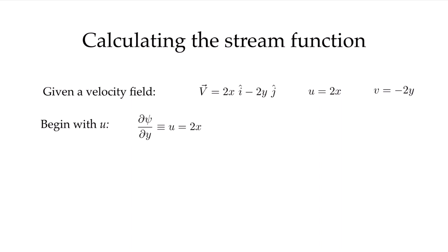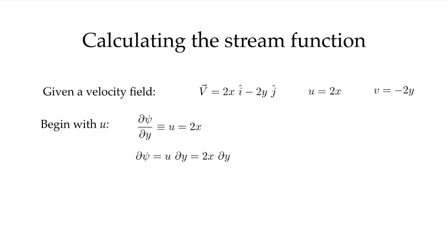Now we can integrate to solve for psi: dpsi equals u dy, which is 2x dy. Notice that dpsi equals a velocity component times a coordinate direction perpendicular to that velocity — this will evaluate to a volume flow rate through a surface with an x-normal direction. Carrying out the integration with respect to y, we get 2xy, plus some arbitrary function of x alone, which would vanish when we take the derivative with respect to y.